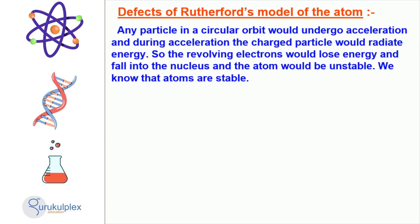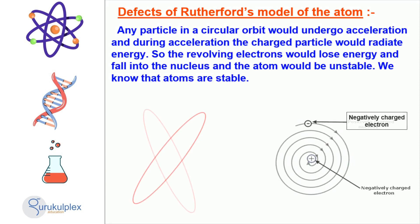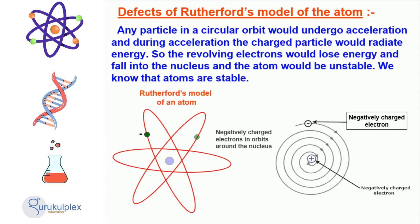Rutherford's model of an atom depicts a very small and positively charged nucleus surrounded by negatively charged electrons in circular orbits. Although the model is widely accepted, it has some major flaws. One of the biggest challenges is that according to classical physics, any particle in a circular orbit will experience acceleration. This will cause the particle to emit energy and the electrons will eventually lose enough energy to collide with the nucleus, leading to an unstable atom. However, it is clear that atoms are not unstable, which cannot be explained by Rutherford's model.